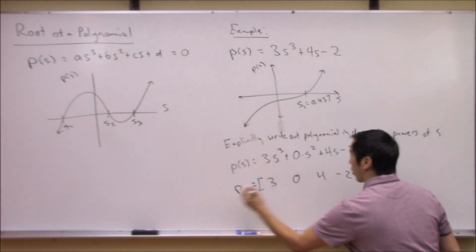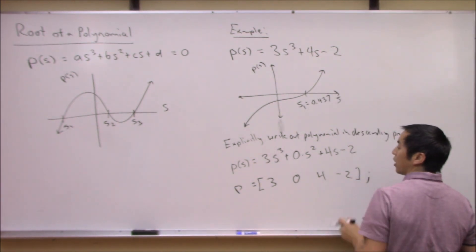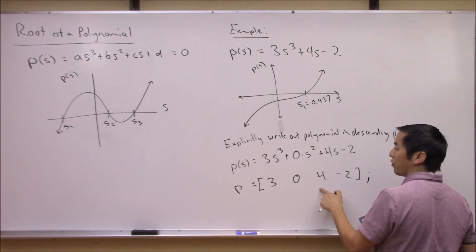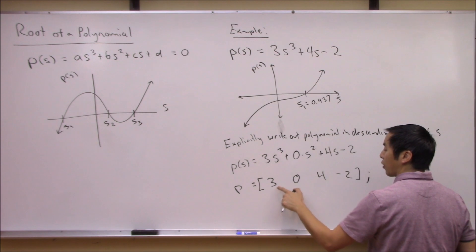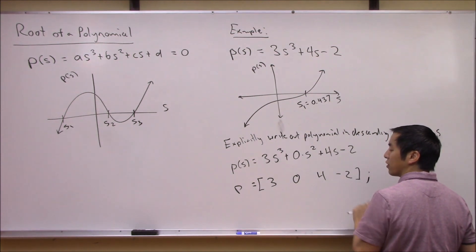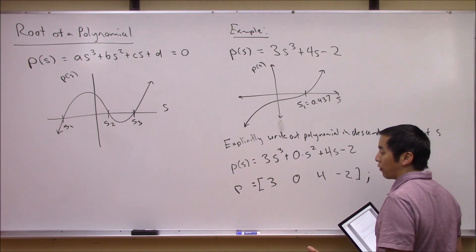So in MATLAB, this one by four array is basically equivalent to this polynomial. So MATLAB will now understand that this is a third order polynomial with these coefficients and then we need to go ahead and ask it to solve for the roots.